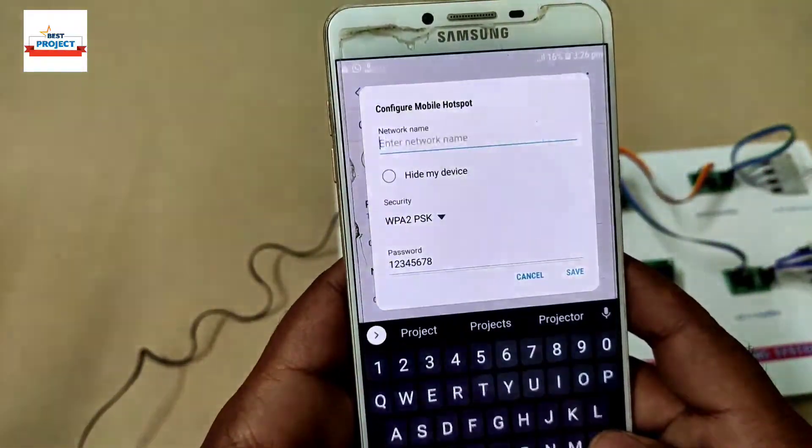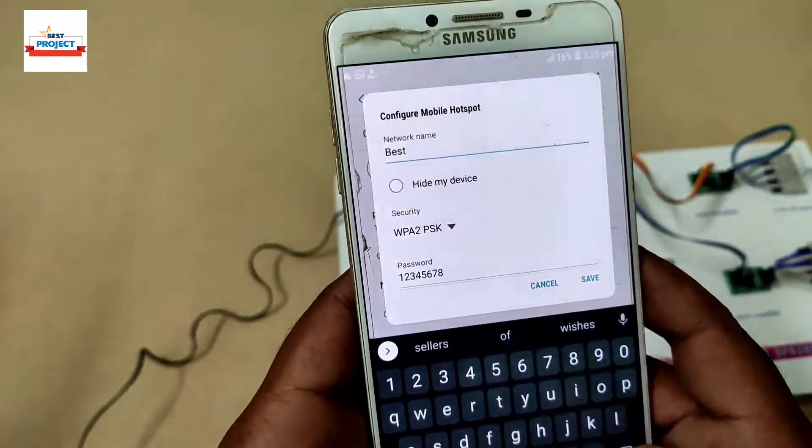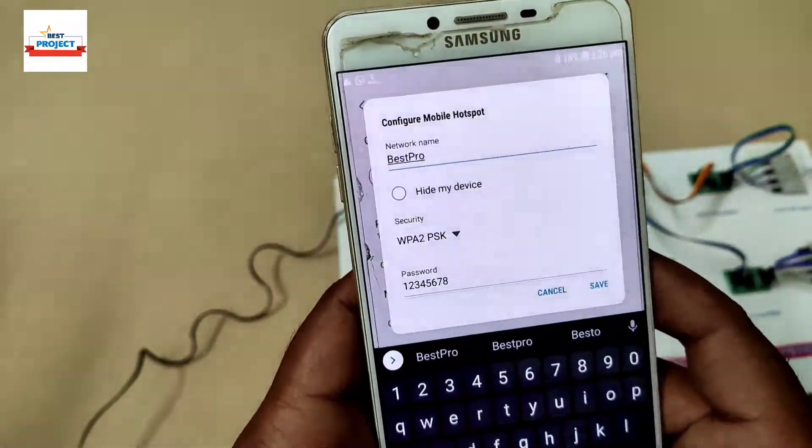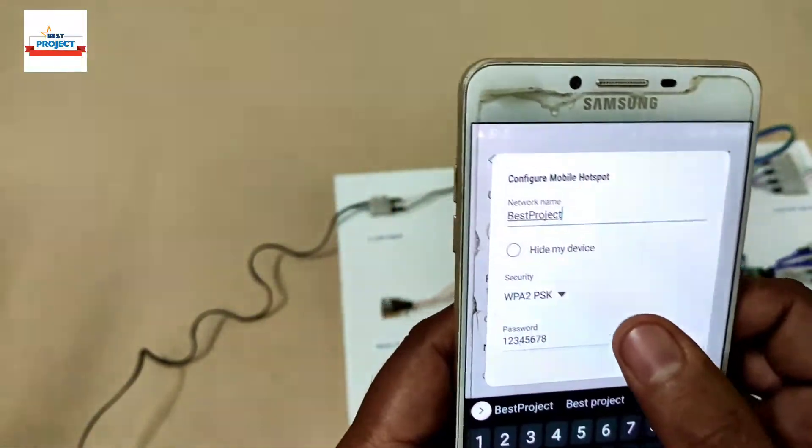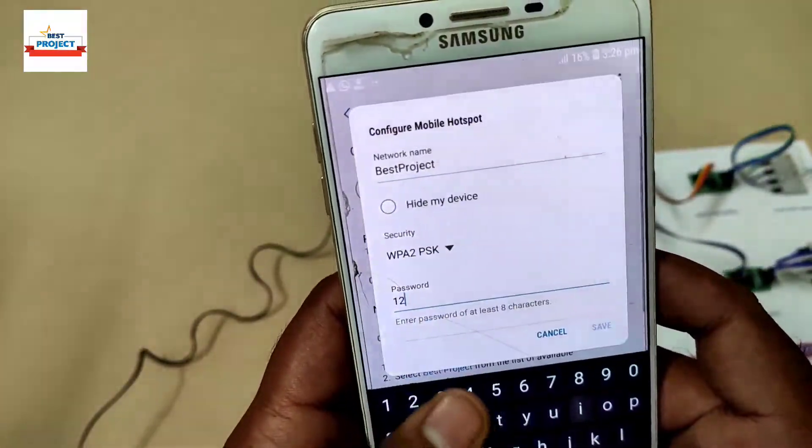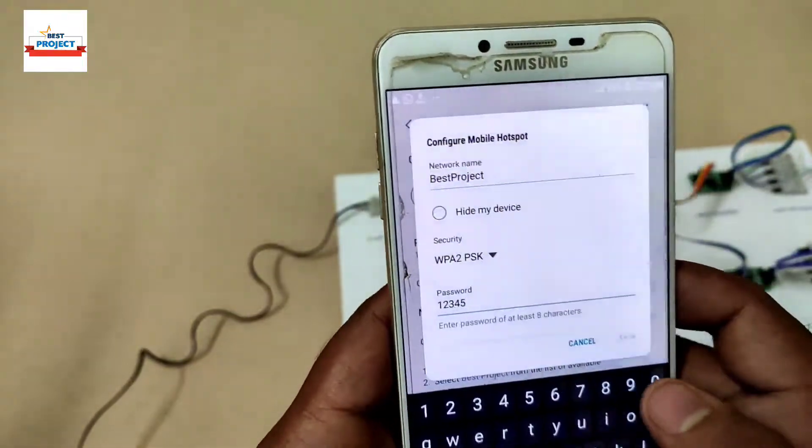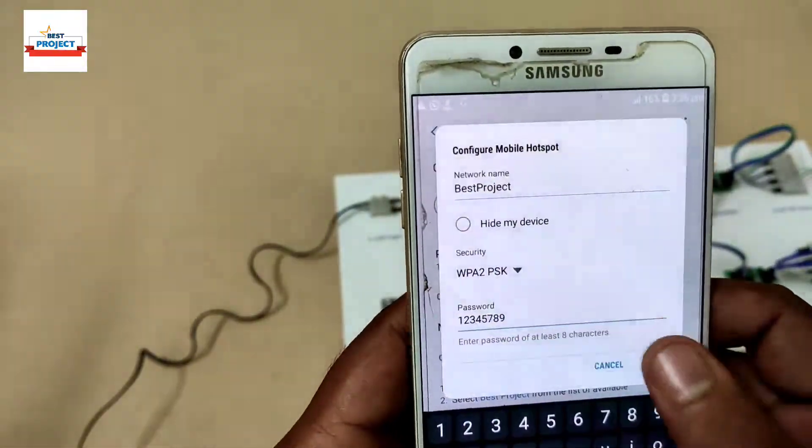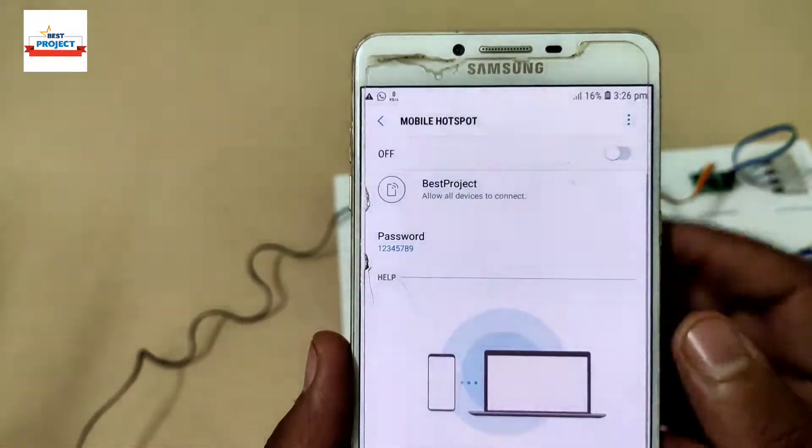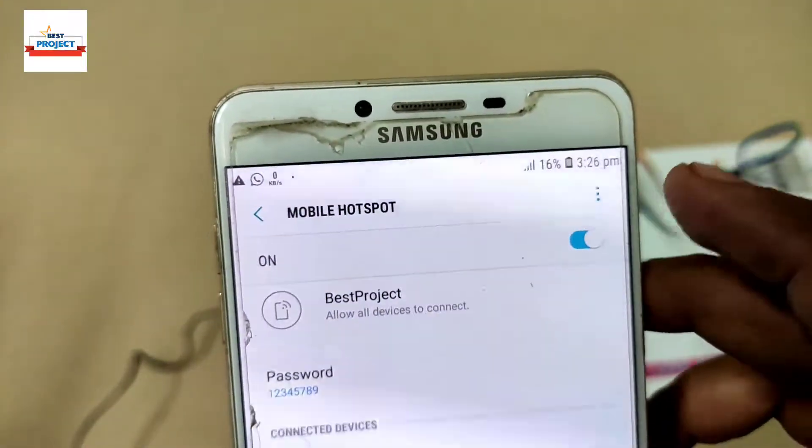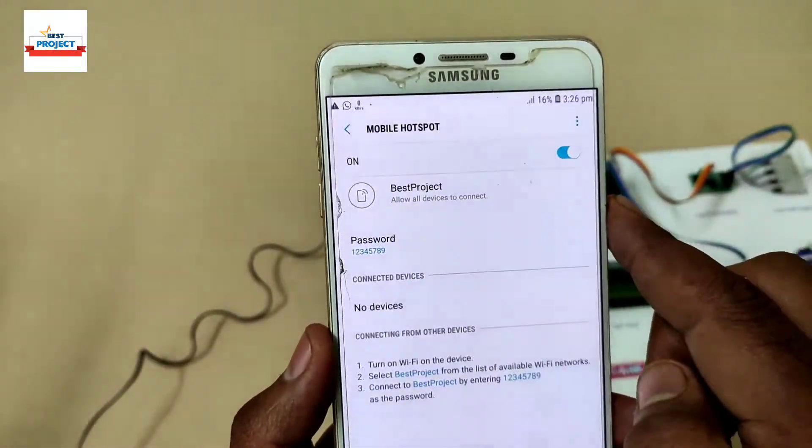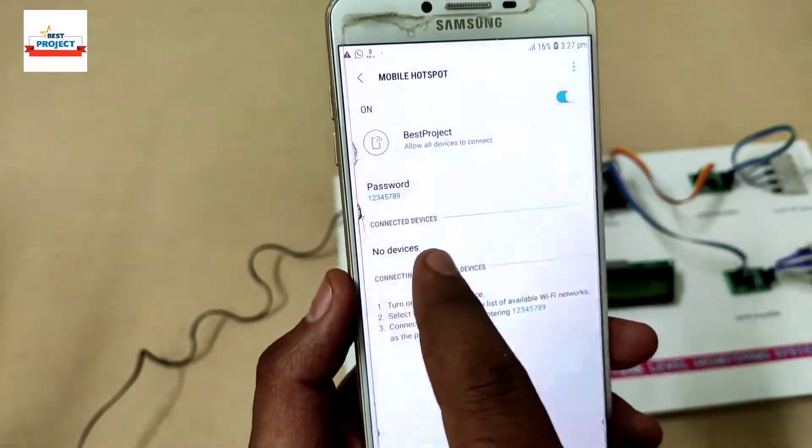First, we need to configure the Wi-Fi hotspot. We need to enter the Wi-Fi name as entered inside the code, and then enter the password to connect with the Wi-Fi connectivity.